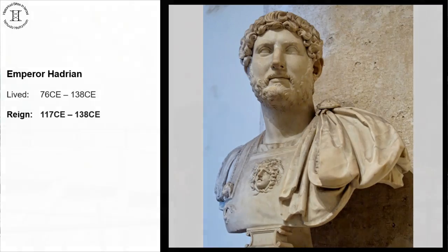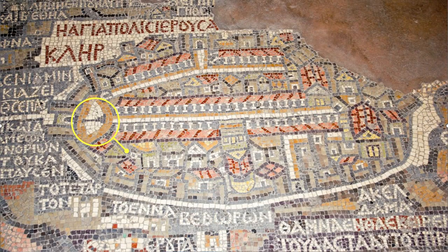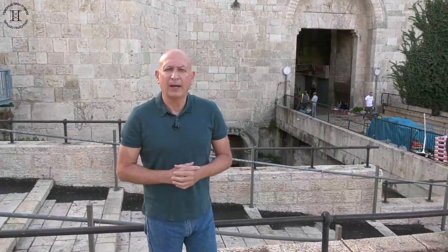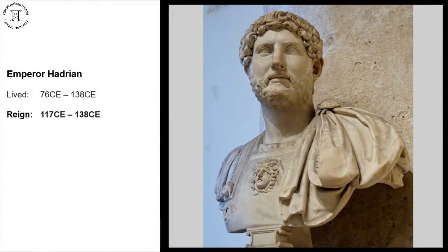From this column, the distances to the various cities were measured. The column also appears on the map of Madaba from the end of the Byzantine period. We will return to the map of Madaba and the streets that originated at the column plaza towards the south of the city very shortly.